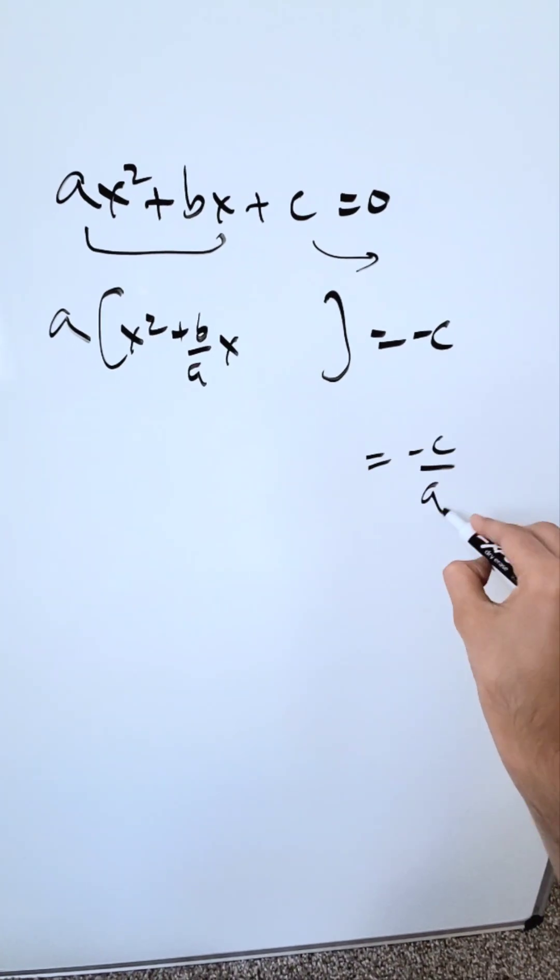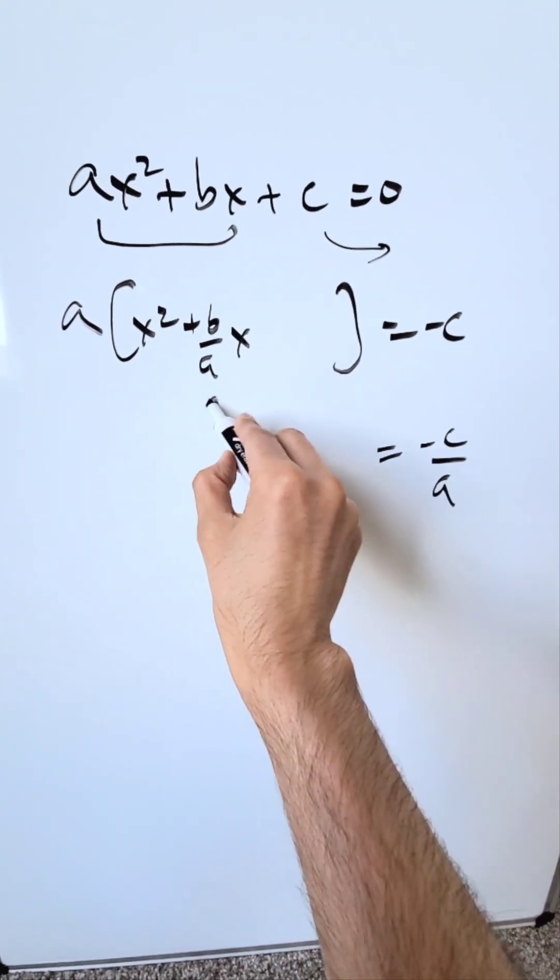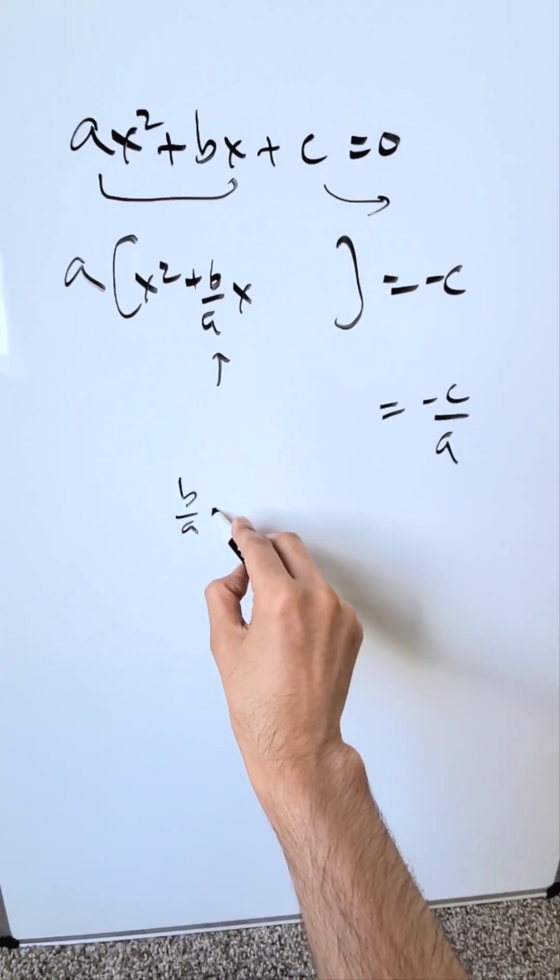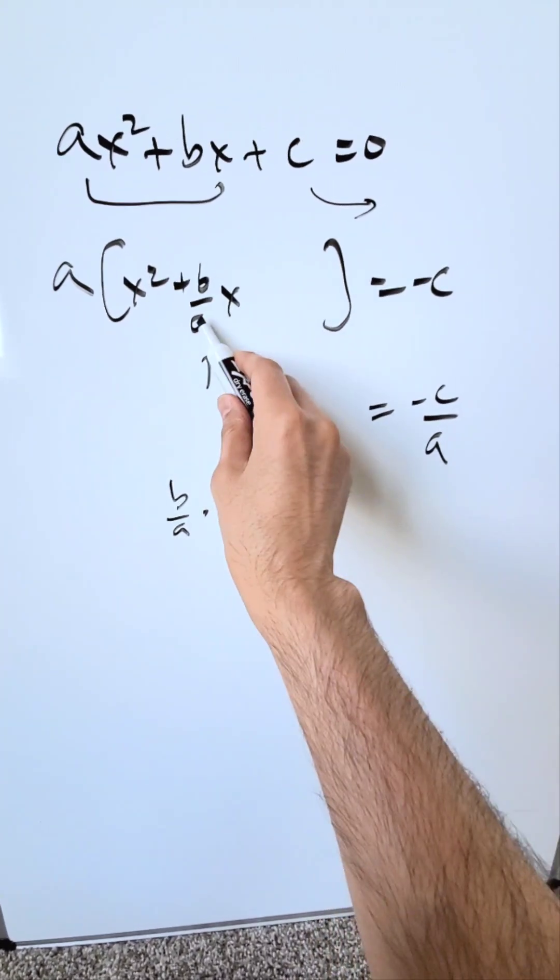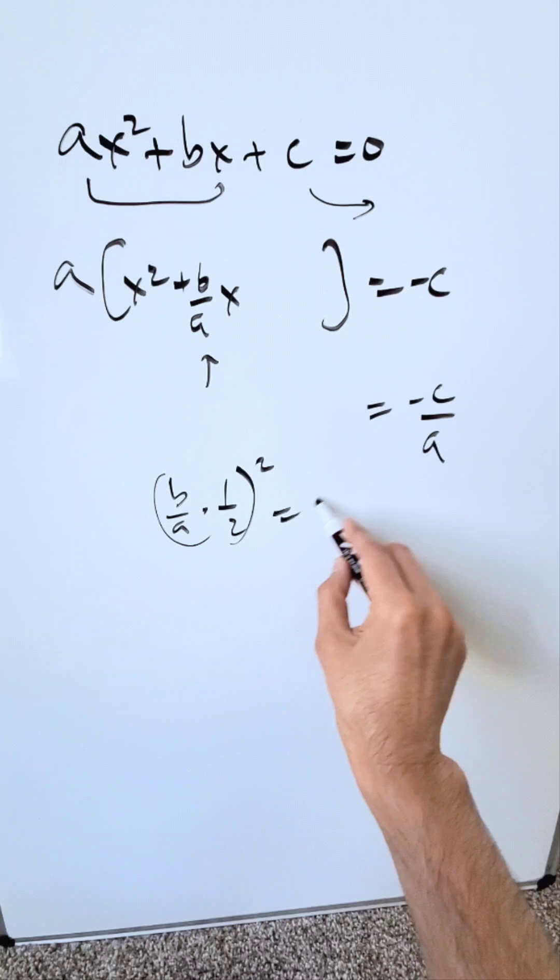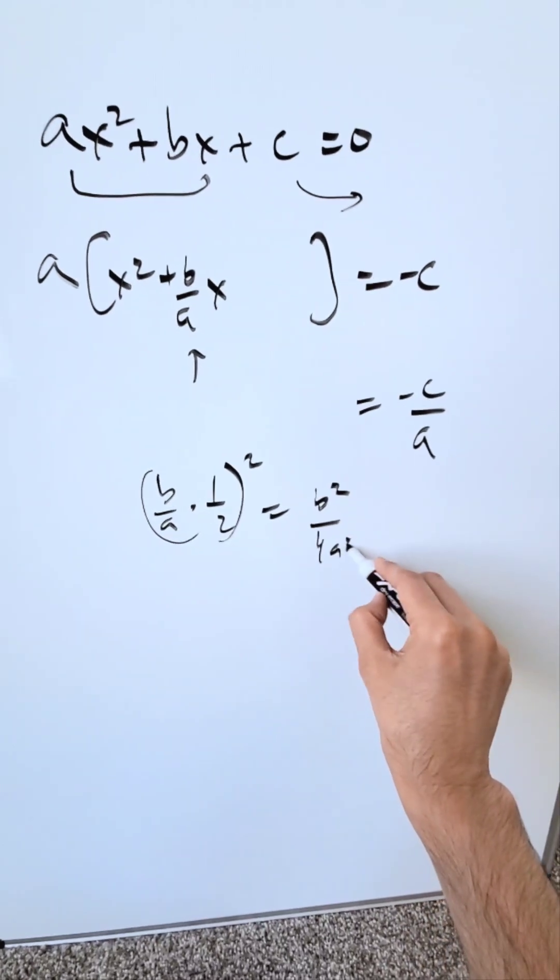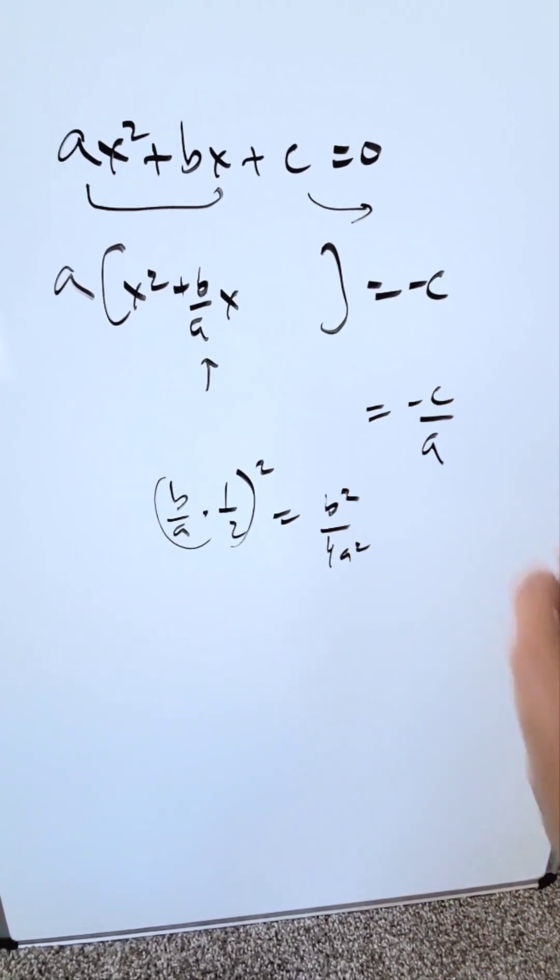You'll have minus c over a. Now look at this term b over ax. You'll do b over a times 1 over 2. You're only looking at the coefficient of the x. You'll square this. This is the term b squared over 4a squared which will come right over here on the other side.